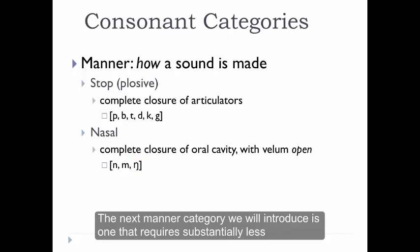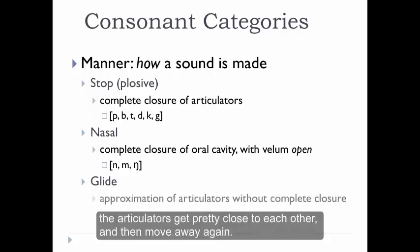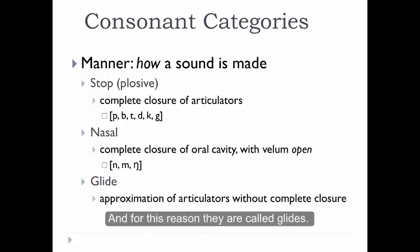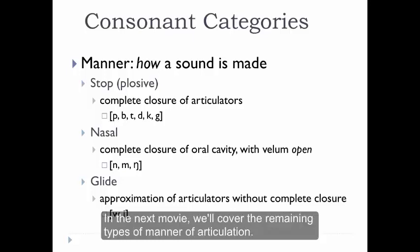The next manner category we'll introduce is one that requires substantially less obstruction to produce. Instead of the articulators coming together completely, the articulators get pretty close to each other and then move away again. In essence, they glide from one position to another, and for this reason they're called glides. There are two glides in English: w as in wet, and y as in yes. In the next video, we'll cover the remaining types of manner of articulation.